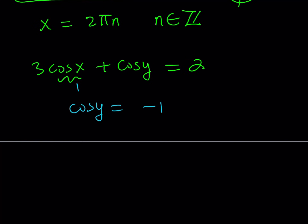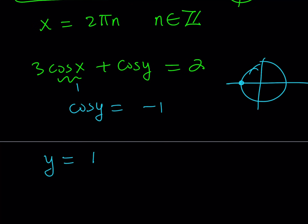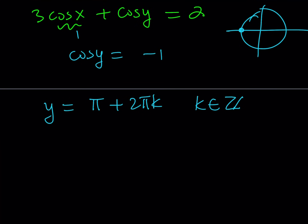If cosine y equals negative 1, looking at the unit circle, that means y equals π. Of course, we have to check to make sure our solutions work because we squared both sides, which could introduce extraneous solutions — we'll check that at the end. So cosine y equals negative 1 means y equals π plus 2πk, where k is an integer. This can be written in compact form as y equals 2k plus 1 times π — odd multiples of π.